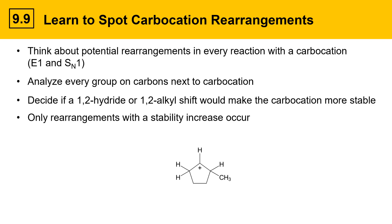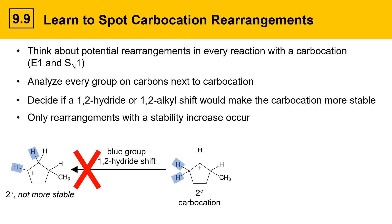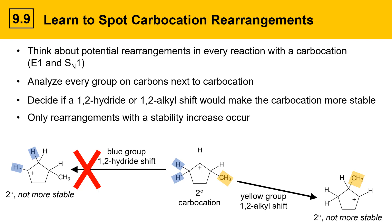Here's an example to illustrate how to go through that analysis. This is a secondary carbocation. I'm going to label the carbon on the left and its groups with blue highlights. If one of these blue groups were to shift over in a 1,2-hydride shift, the carbocation we get is also secondary — it's actually not more stable. Since it doesn't result in a stability increase, this reaction won't happen. Let's consider the methyl group on the next door carbon on the right. If that group were to move over with its bonding pair of electrons to the carbocation, that would also give a secondary carbocation, which is not more stable. So this reaction also won't happen — there's no stability benefit.